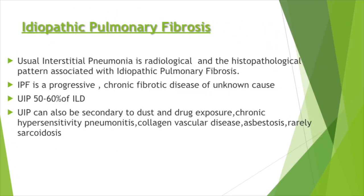The rare group includes lymphocytic interstitial pneumonia and idiopathic pleuroparenchymal fibroelastosis. IPF belongs to the chronic fibrosing type of idiopathic interstitial pneumonia. Usual interstitial pneumonia (UIP) is the radiological and histopathological pattern associated with IPF. IPF is a progressive chronic fibrotic disease of unknown cause, and UIP accounts for 50 to 60 percent of all ILDs.